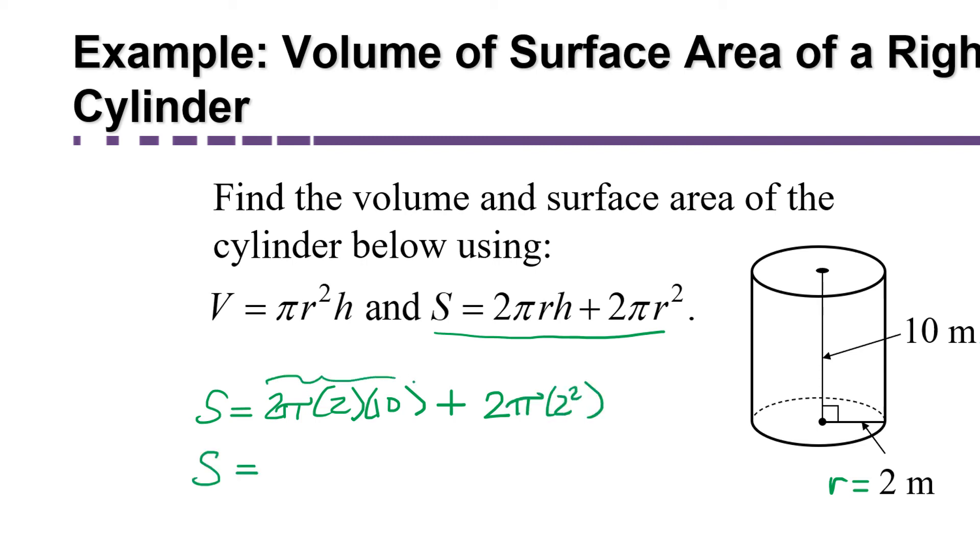Remember, the order in which you multiply doesn't matter, but you have to multiply before you add. So I'm going to have 2 times 2 is 4, times 10 is 40 pi, plus 2 squared is 4, times 2 is 8, so 8 pi. You can add these together. They're like terms, just like if you had an x. You just have a pi instead. So 40 pi's plus 8 pi's totals 48 pi's altogether.